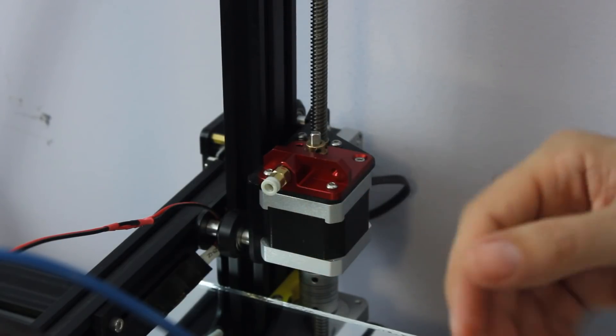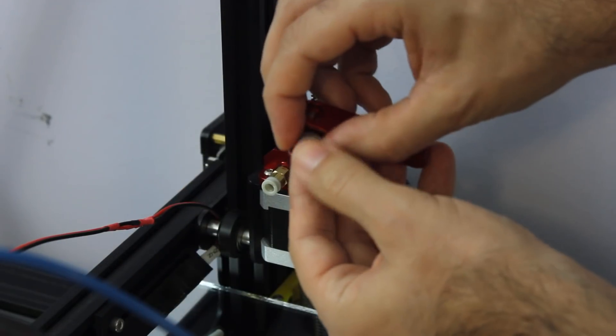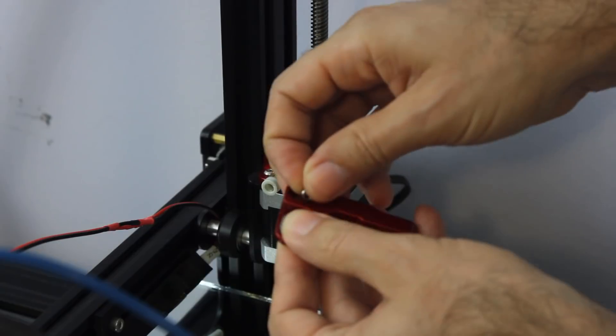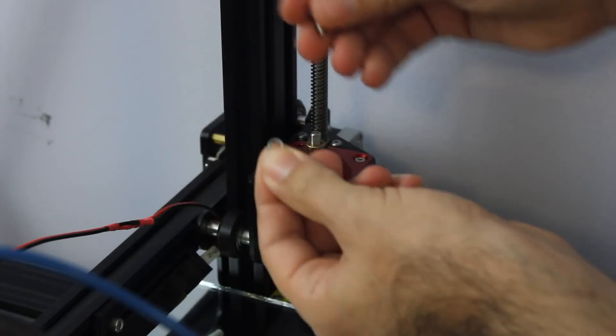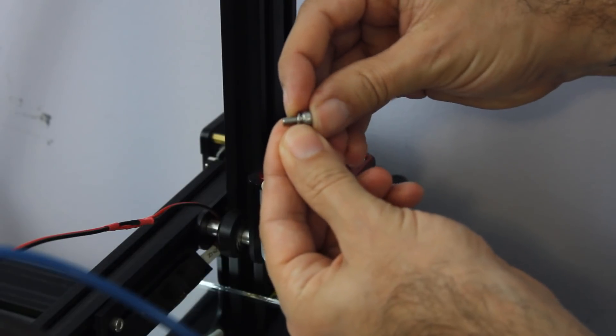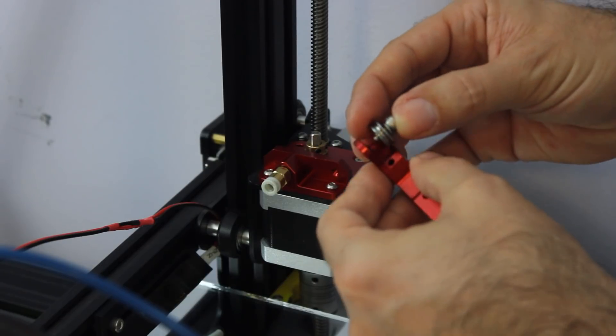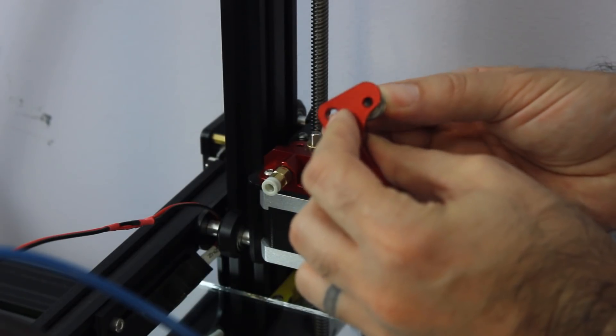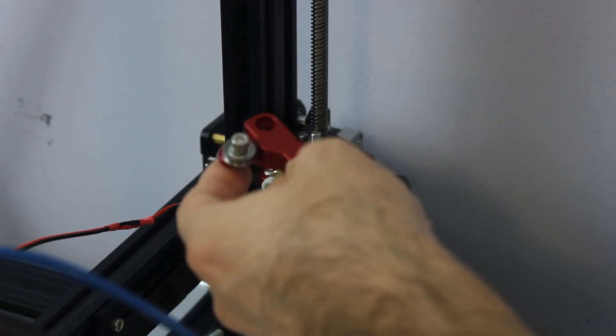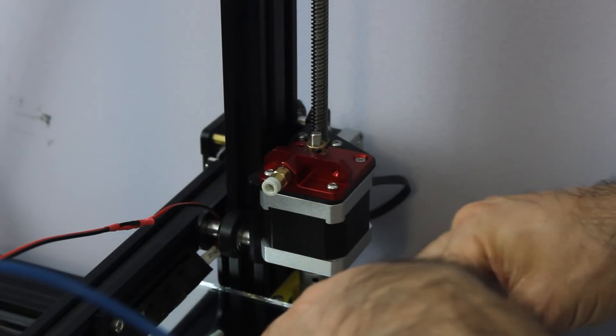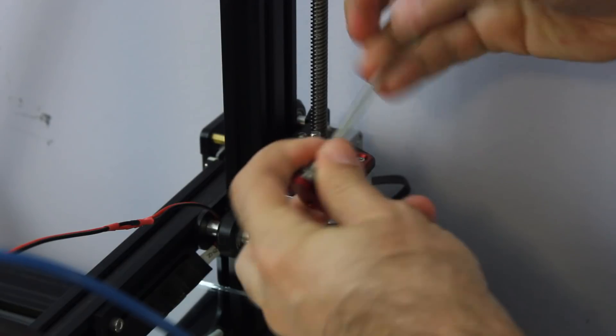All right, now we're going to take this and we're going to go ahead and put the idler on there. And now for that one we're going to use the lock washer and this one through there, and then in there, and then tighten this.